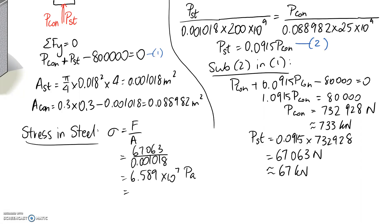So this is 6.589 by 10 to the 7. And of course, that's a really big number. So if you divide it by 10 to the power of 6, you end up with your answer in megapascals, which is 65.9 MPa.